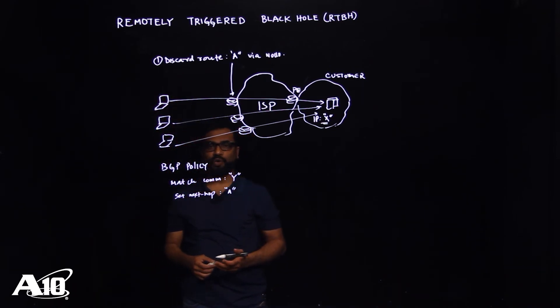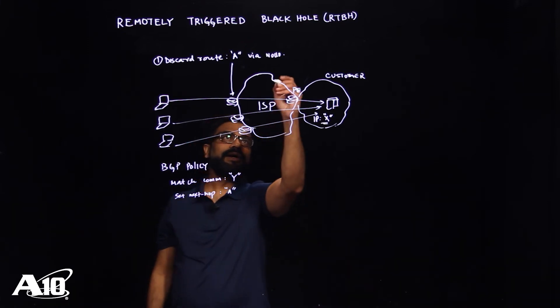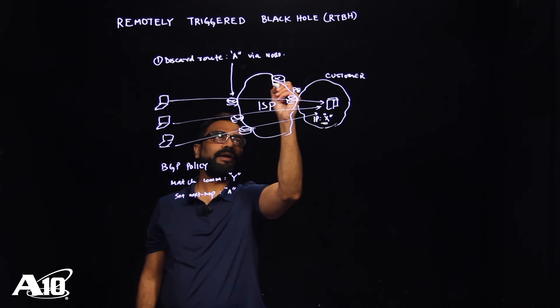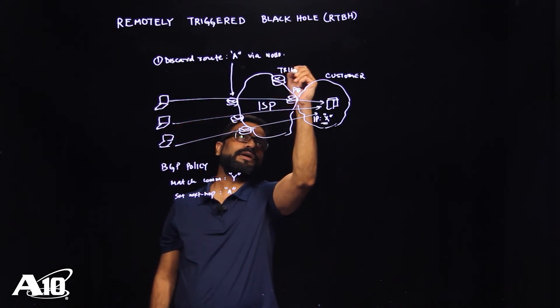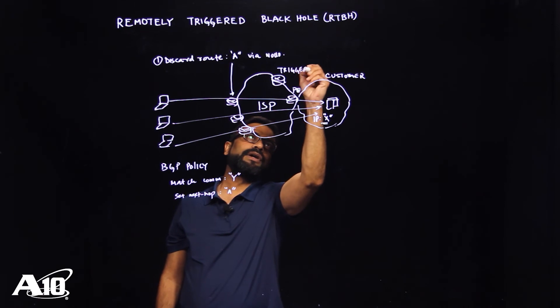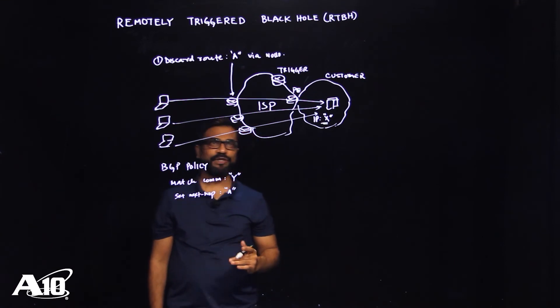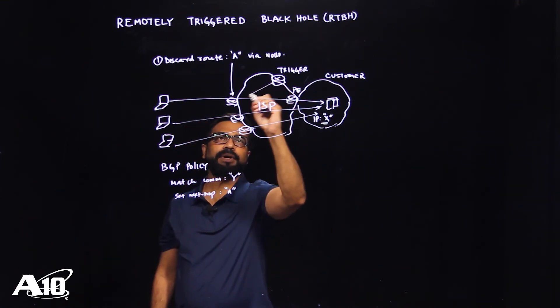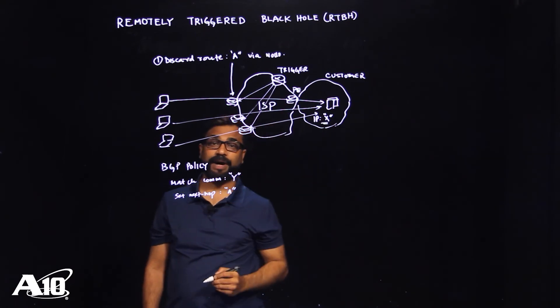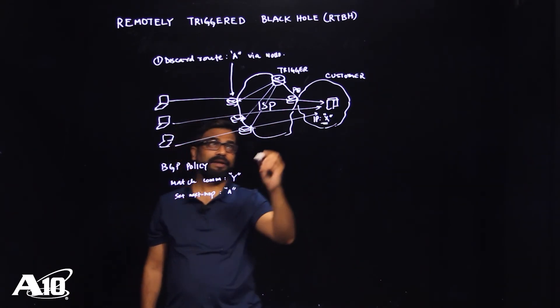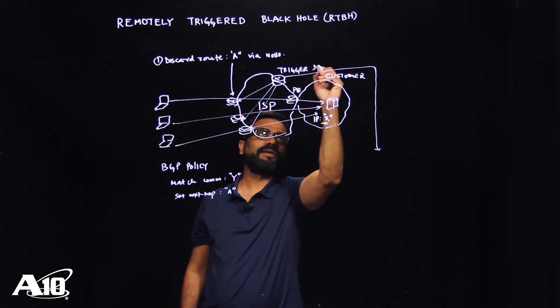Now the question here is, who's going to trigger that update? Well, for that, we need another device in the network and we're going to call this device a triggered device or a router. So this trigger device needs to have IBGP pairings with all your edge devices. And this triggered device, let me write down device.